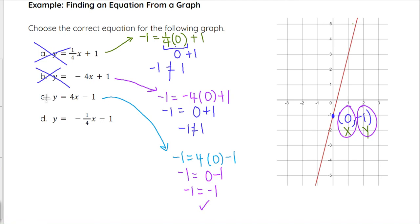That does not mean that C is definitely our answer because we could have other lines that also go through that point. We could have this line right here, for example, would go through that point. So the equation of that line would be satisfied by 0 comma negative 1. We need to find a second point that will also work on that same equation, and that will determine which equation is correct.